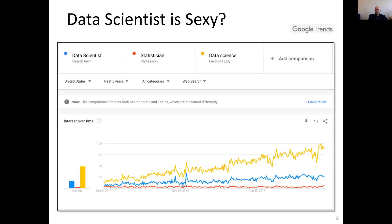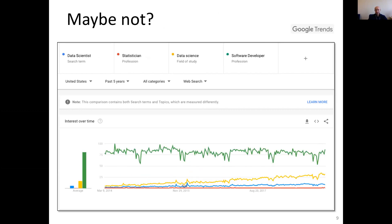Is it really sexy? Let's go to Google Trends. I created these slides last year, so they are not really outdated — just one year old. If you look at the past five years, you check Google Trends and you will see the yellow one is data science. The trend is rising. But if you add software developer — the green line — you see software development is still more trendy than data science.